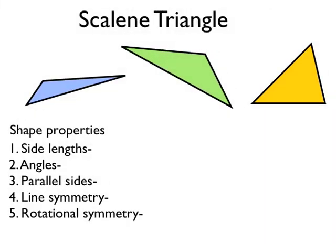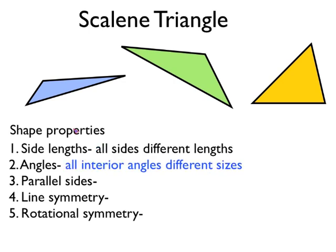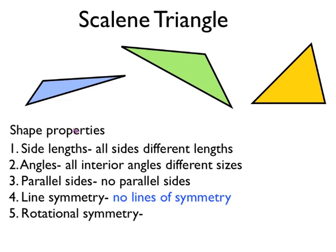Let's look at the shape properties of scalene triangles. I've drawn three scalene triangles here. On scalene triangles, all the sides are different lengths — there aren't any sides in the triangle which are the same length as each other. All of the interior angles are different sizes as well. So the sides are all different lengths and all the angles inside the triangle are different sizes. There are no parallel sides and no lines of symmetry.